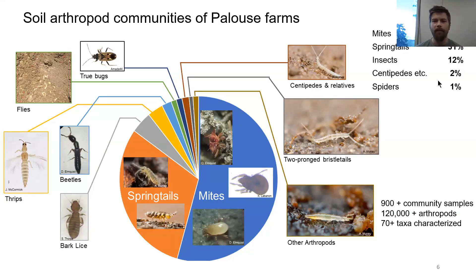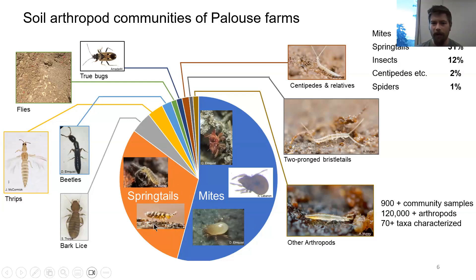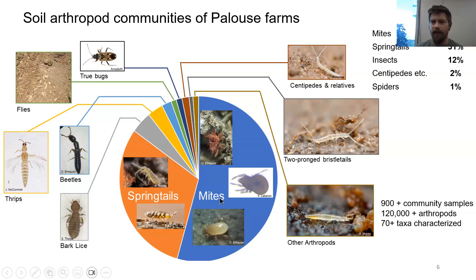This data serves as a baseline for monitoring changes in these communities over time. Like most soil arthropod communities, our soil arthropod communities are dominated by springtails, also called Collembola, and mites. We'll talk more about these as we move through the presentation, but they make up about 80 to 85% of the arthropods that we sampled so far.